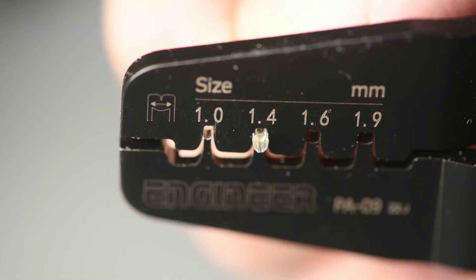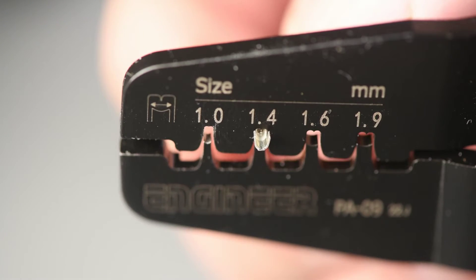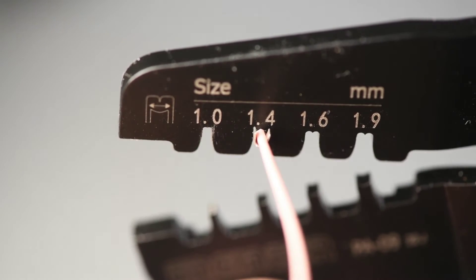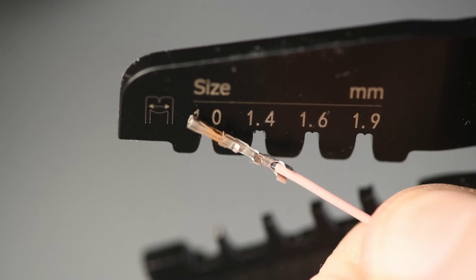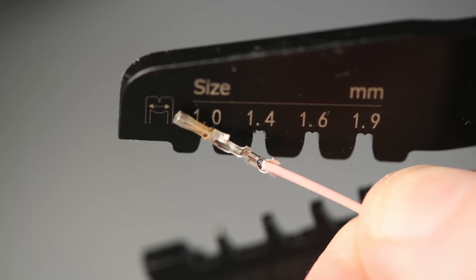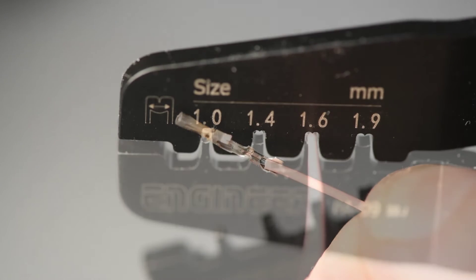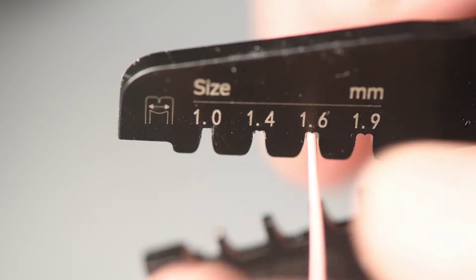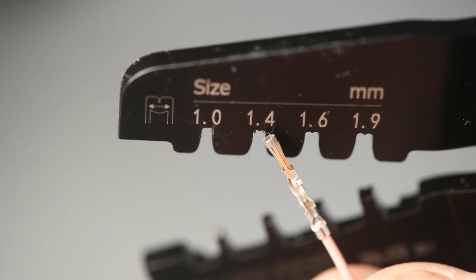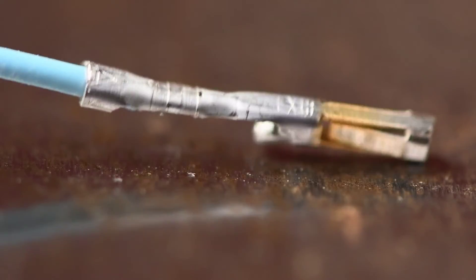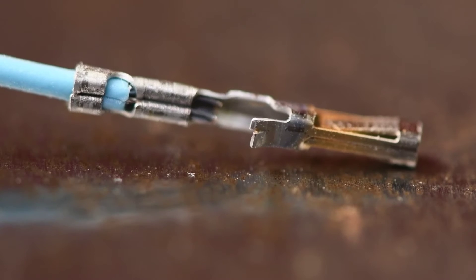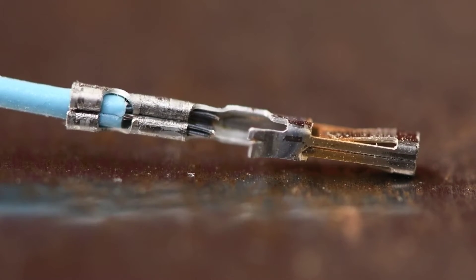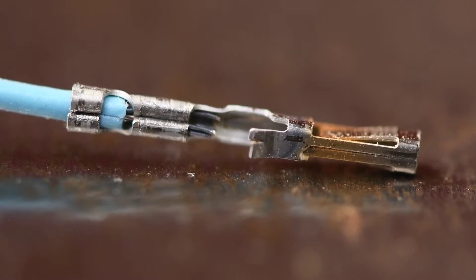Here I'm going to try the Molex SL terminals. The IWS-3220M did a great job with these. The wire crimp goes into the 1.4 millimeter slot. Again, using 26 gauge wire here. I'll use the 1.6 millimeter slot for the insulation clamp. Looks great. But so did the crimp from the IWS-3220M and it did it in one step. I'll probably continue to use the IWS-3220M for these because it's easy and I don't really see much difference in the crimps.